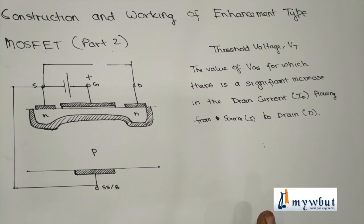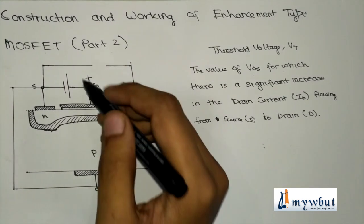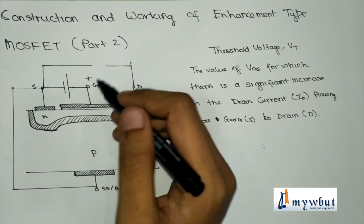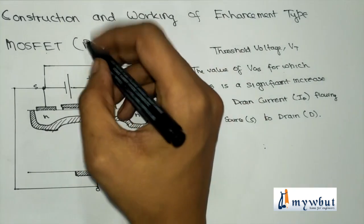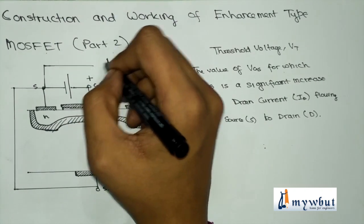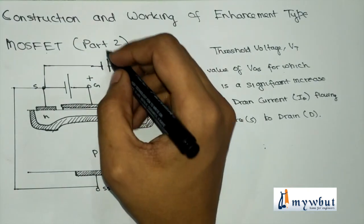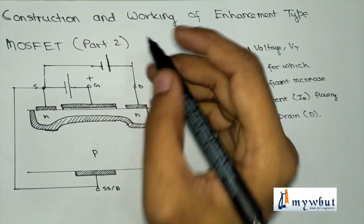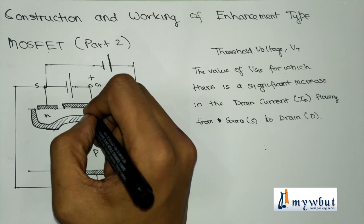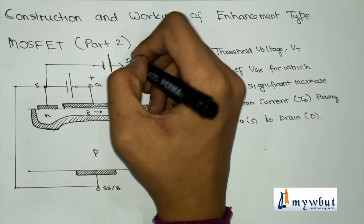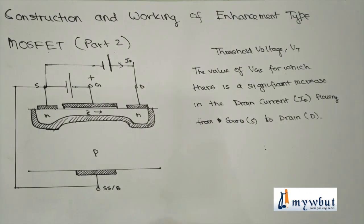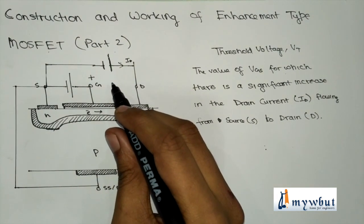Now we look at the various cases of working of the enhancement type MOSFET. To provide current flow from drain to source, we apply a positive potential to the drain terminal and a negative potential to the source terminal. Electrons flow from source to drain, and since conventional current is opposite to electron flow, the drain current Id flows from drain to source.